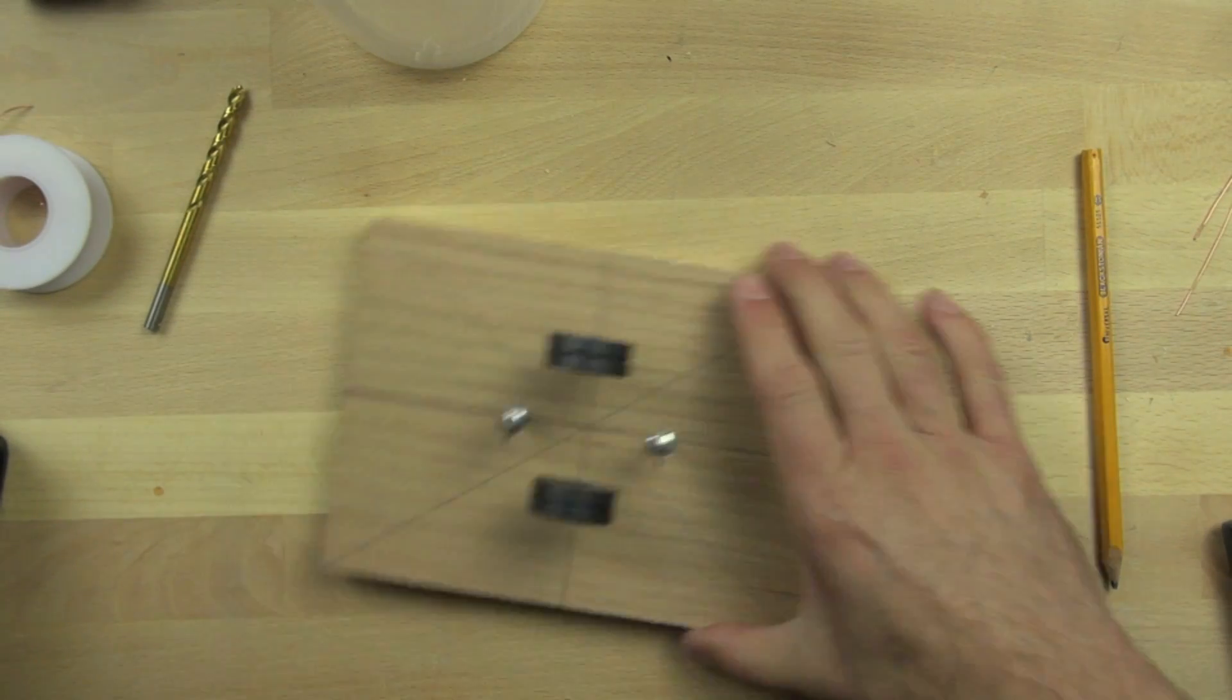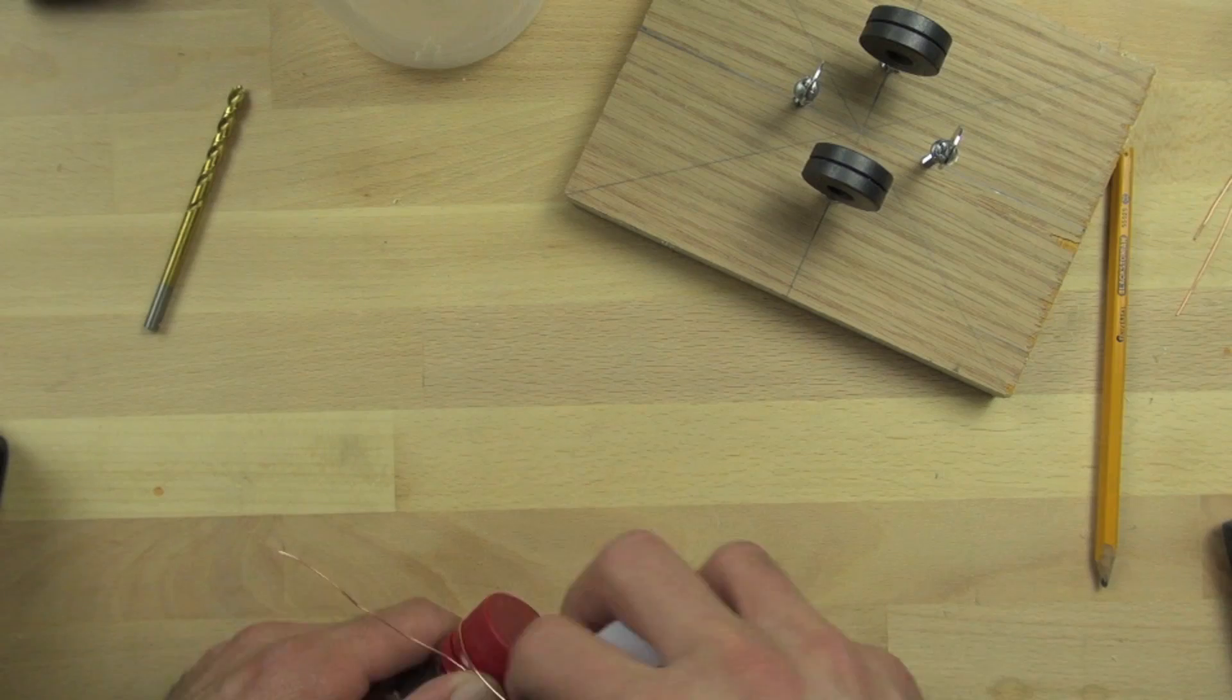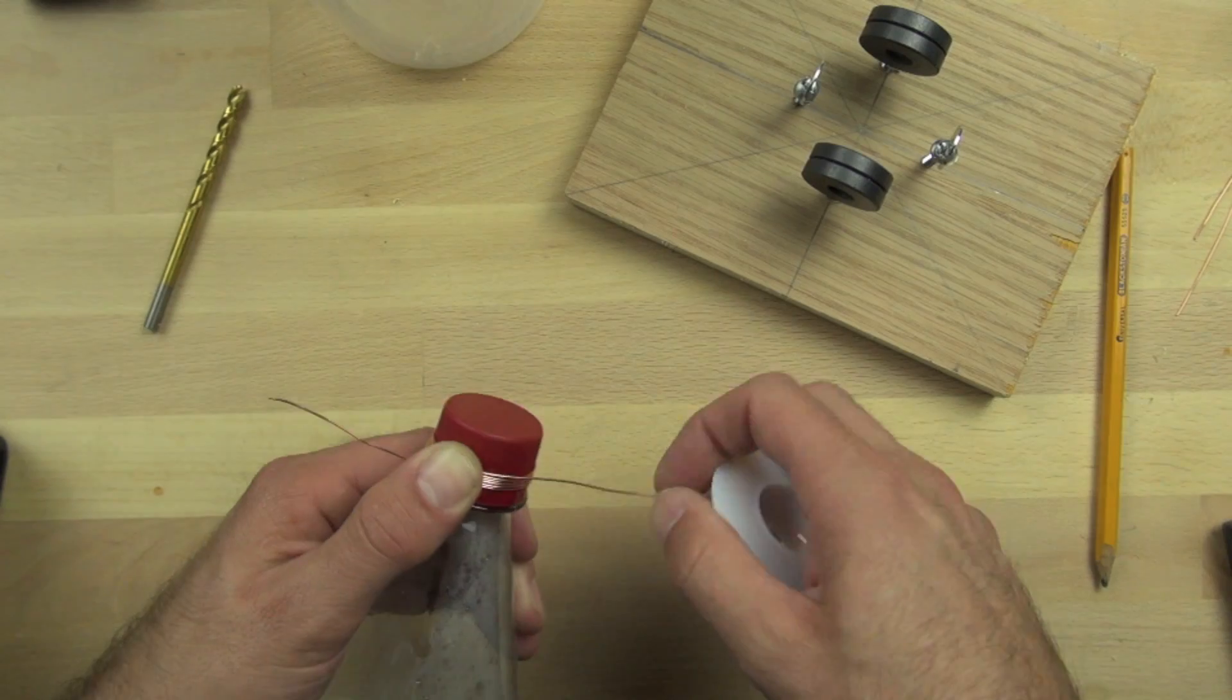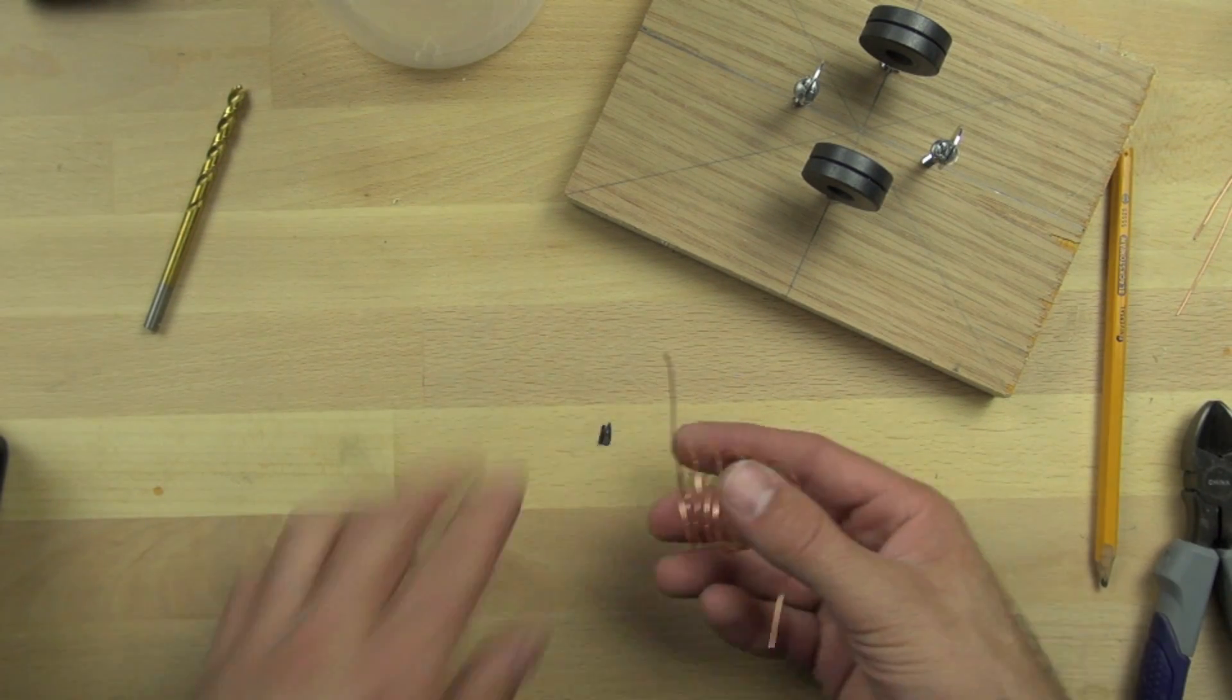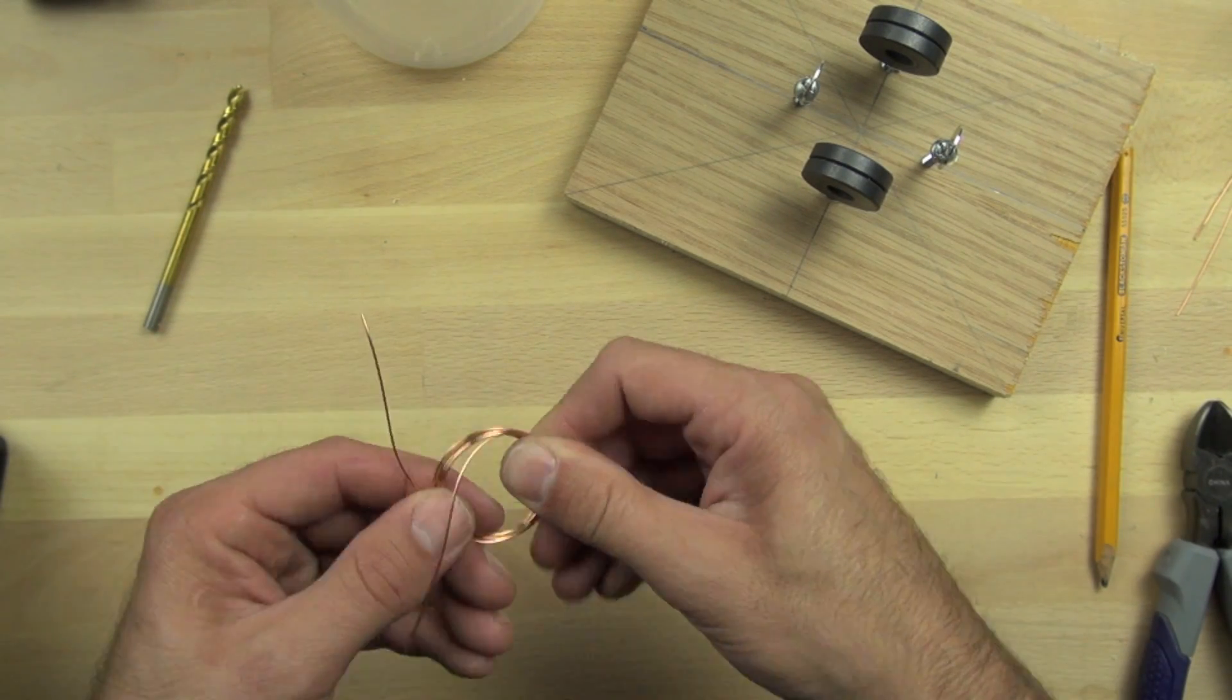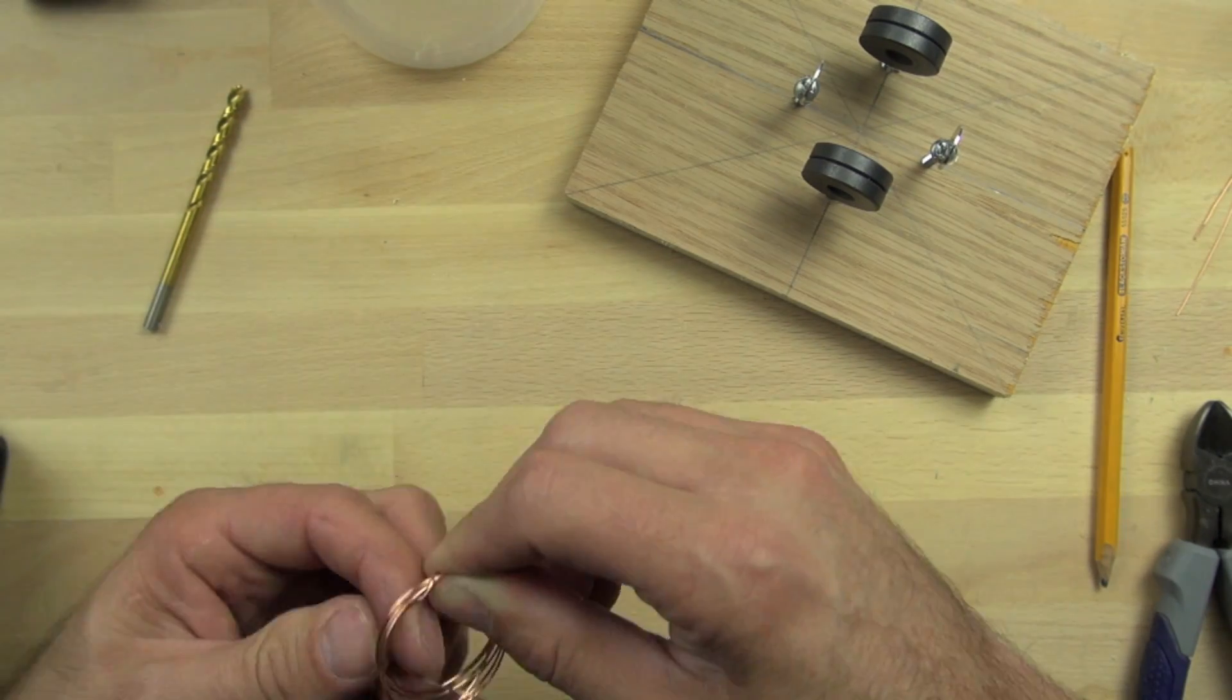And so now we're going to take our bottle cap that we had talked about earlier. We're going to wrap our field coil around it. And we're going to go around it seven times. And then once we've got the coil a fairly good length, we have about three inches of wire on either side.